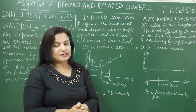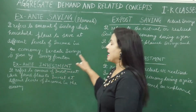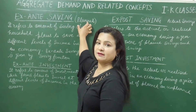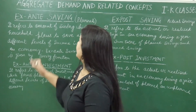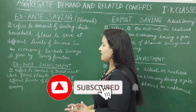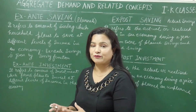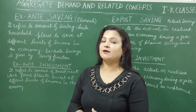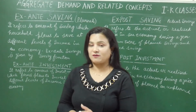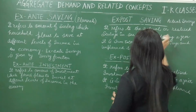Now we are doing some important terms: ex-ante savings and ex-ante investment. What is ex-ante savings? Ex-ante means planned. So ex-ante savings means planned savings. It refers to the amount of savings which households plan to save at different levels of income in an economy during a year. Ex-ante savings is given by the saving function, also called propensity to save. For example, at 100 crore level of income, the household sector plans to save 30 crores — that is ex-ante savings.